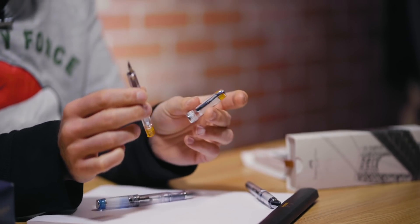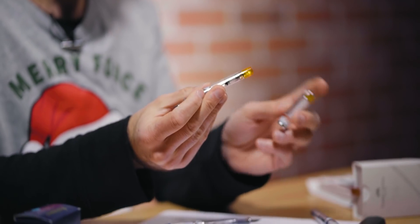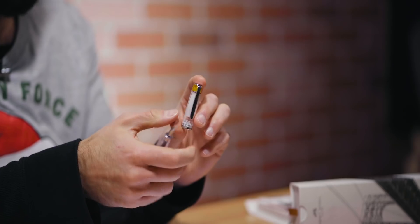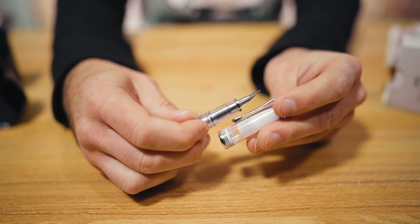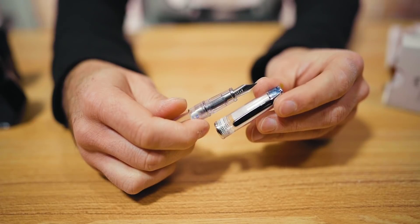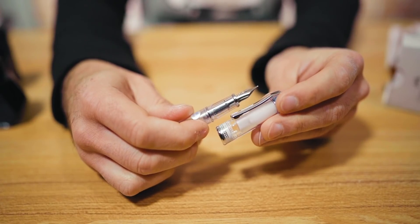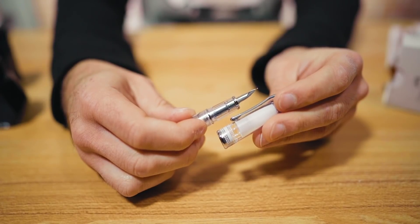And they all have the signature little accent of color that's either at the top finial of the cap and the bottom finial of the barrel. They have a stainless steel nib available in either fine, medium, or a calligraphy style stub, which is, I think, a 1.0 millimeter size.